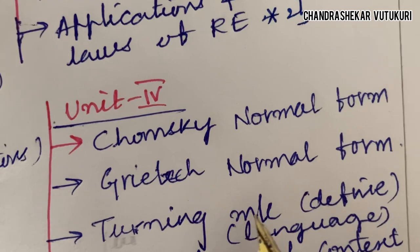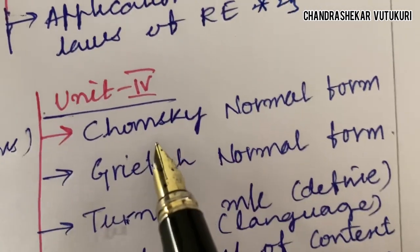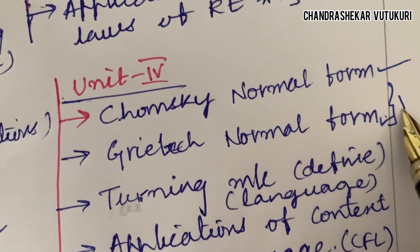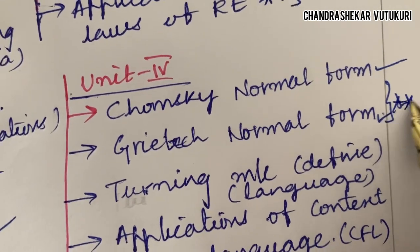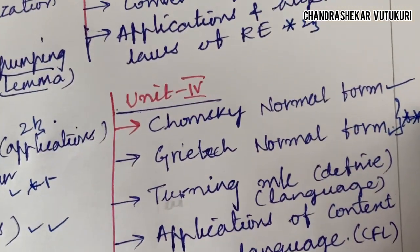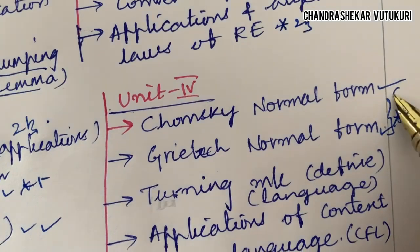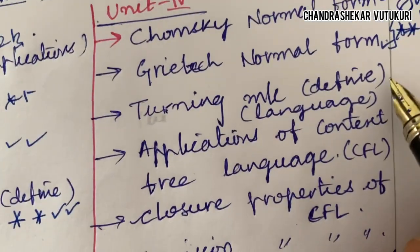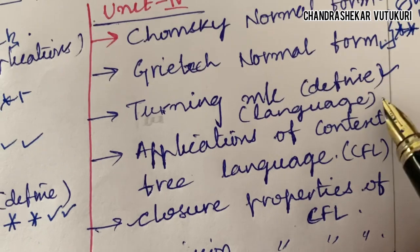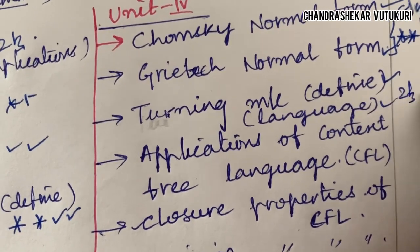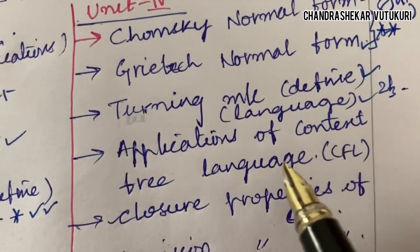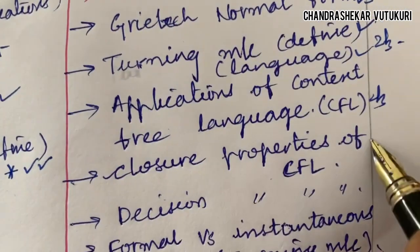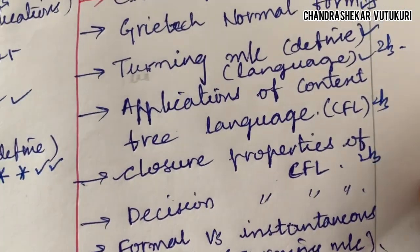Moving to Unit 4 — Chomsky Normal Form (CNF) and Greibach Normal Form (GNF), along with problems related to them, are topmost questions. Differences between the two may appear as short questions, possibly in 8A and 8B. Turing machine — defining the term and Turing machine language — may be a 2 or 3 mark question. Applications of context-free languages and closure properties of CFL may also appear as short questions.